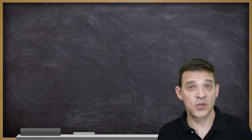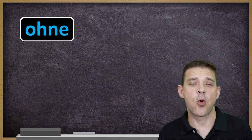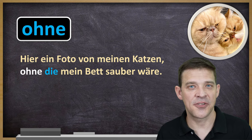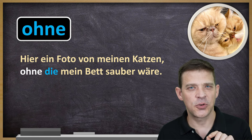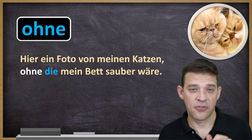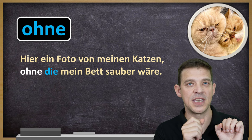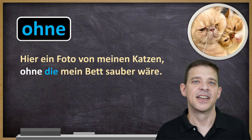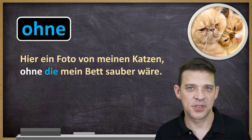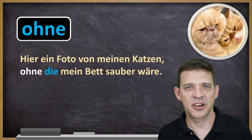Now let's look at some accusative prepositions — prepositions which only take the accusative case. Zum Beispiel ohne. Hier ist ein Foto von meinen Katzen, ohne die mein Bett sauber wäre. Here is a picture of my cats, without whom my bed would be clean. And this is Konjunktiv, because they are there and my bed is not clean — it would definitely be cleaner if they weren't there.